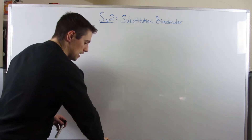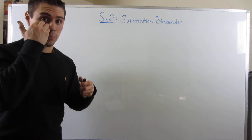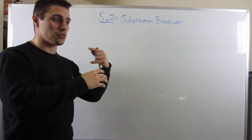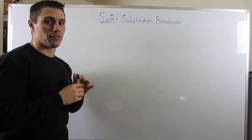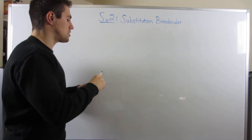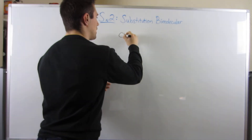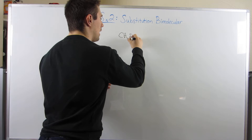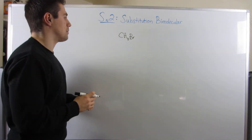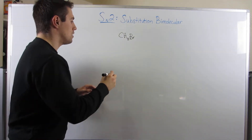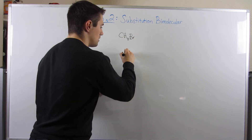I'm going to show you an example, finish it, and then backtrack and explain everything. So let's say we had this structure right here — methyl bromide, if we're going to flaunt our common naming abilities. Let me draw this out.